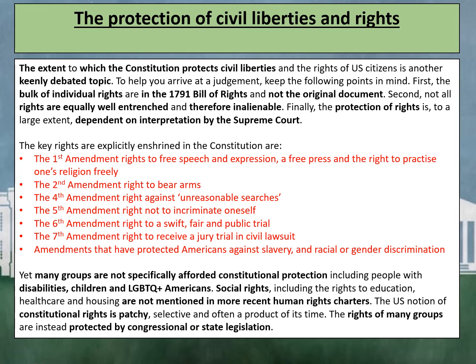The key rights explicitly enshrined in the Constitution are the First Amendment rights to free speech and expression, a free press and the right to practise one's religion freely, the Second Amendment's right to bear arms, the Fourth Amendment's right against unreasonable searches, the Fifth Amendment's right not to incriminate oneself, the Sixth Amendment's right to a swift, fair and public trial, the Seventh Amendment's right to receive a jury trial in civil lawsuits, and amendments that have protected Americans against slavery and racial or gender discrimination.